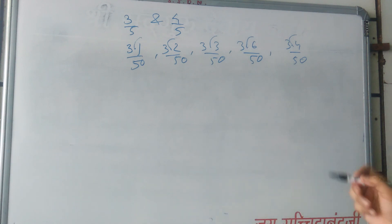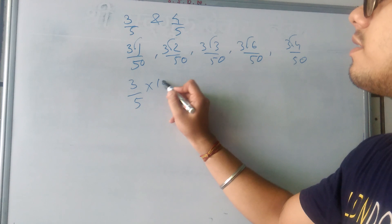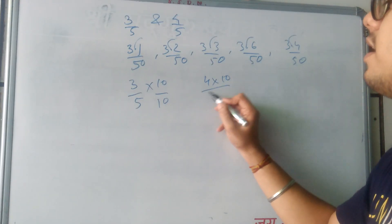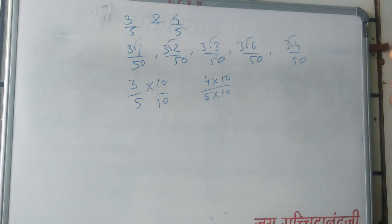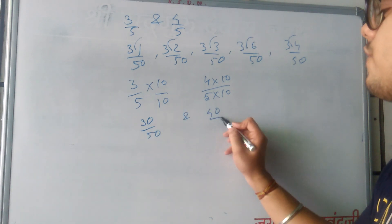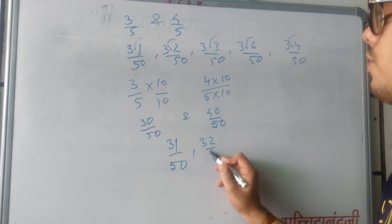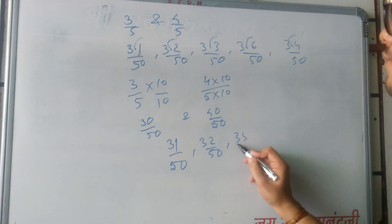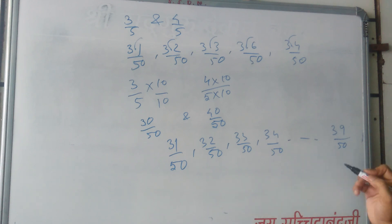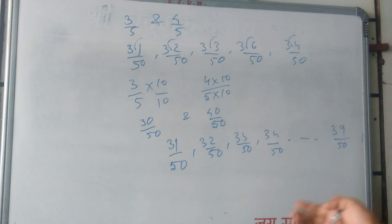You have to write only 5, we have many more. Another way is to multiply 10 on both numerator and denominator — it is not going to make any change. So we get 30 upon 50 and 40 upon 50. Numbers you can place are 31 upon 50, 32 upon 50, 33 upon 50, 34 upon 50 till 39 upon 50. In this case we are going to have 9 rational numbers between them.